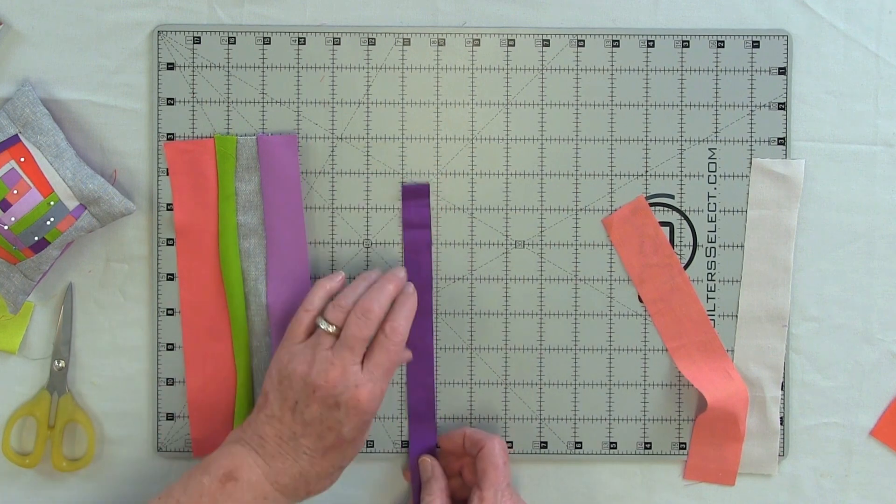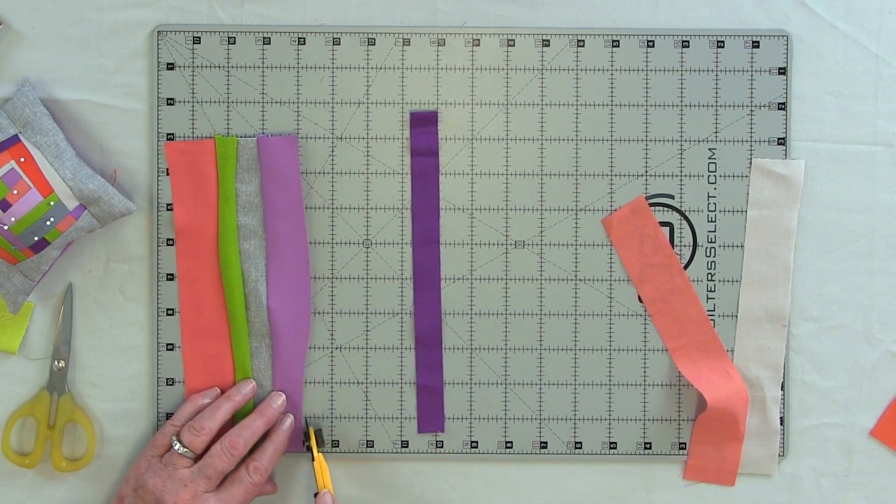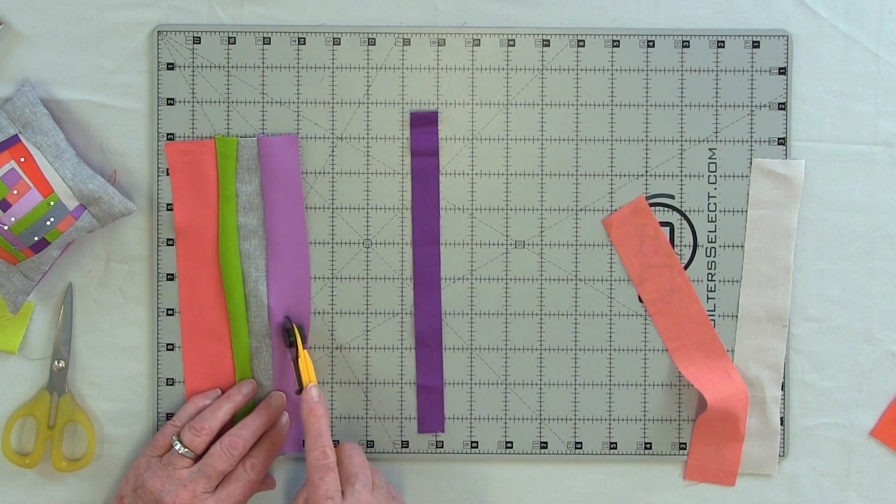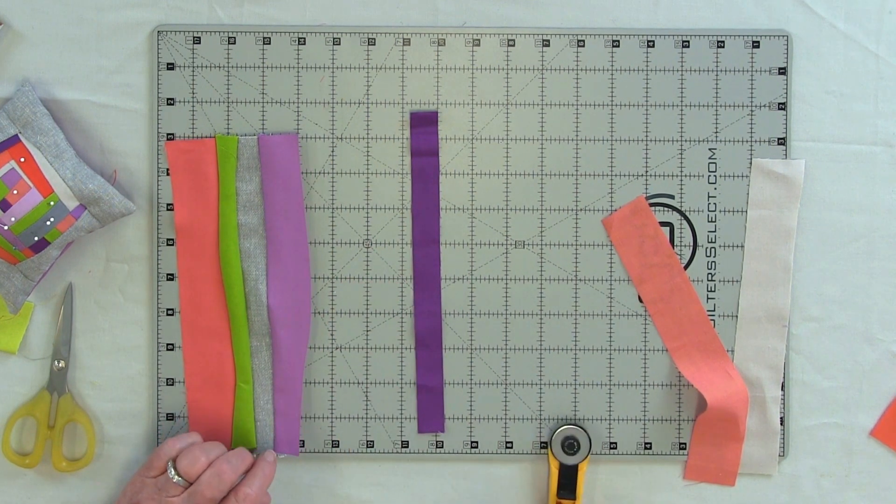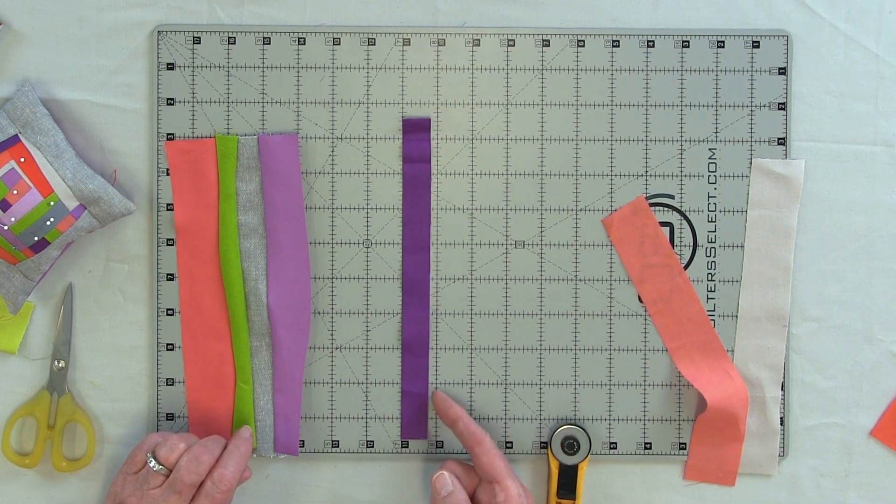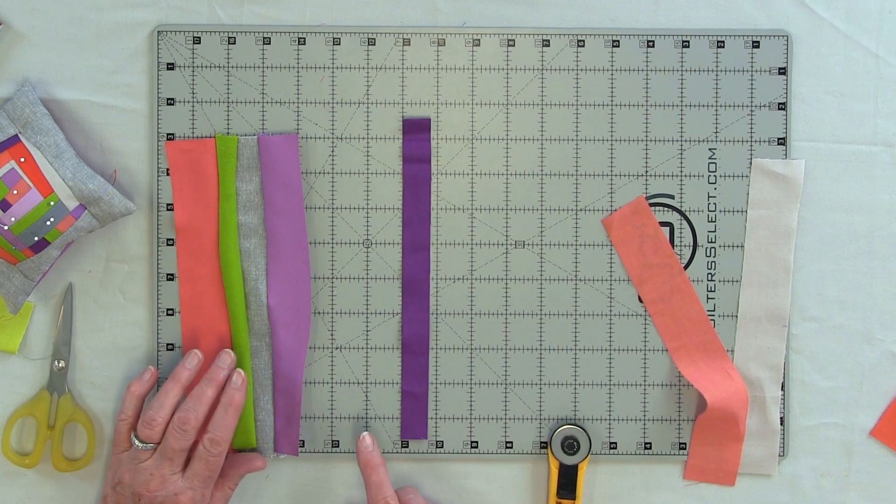What I have done is cut a gentle curve along the edge of the fabric. I want to use a strip that is three-fourths of an inch wide. You can put your ruler on and cut that three-quarter inch, or you can lay it on a cutting mat that has a grid and eyeball the three-quarters of an inch.